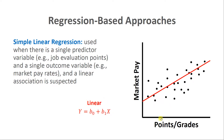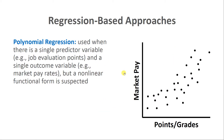Moving on to non-linear approaches for modeling the association between job points or grades and market pay rates: we use the same base formula for a line as a starting point but adapt it. When a scatter plot shows clear curvature, a line would not fit the data well. One approach is polynomial regression — think about adding exponents such as squared or cubed terms — in order to model curvilinear or non-linear associations.